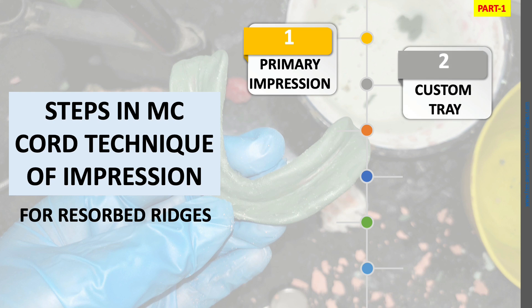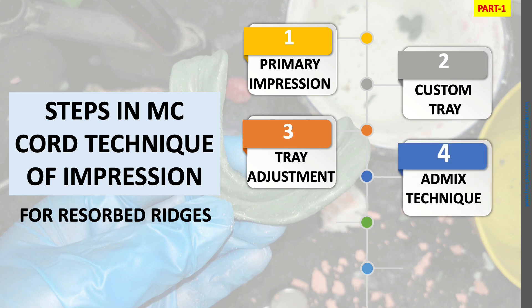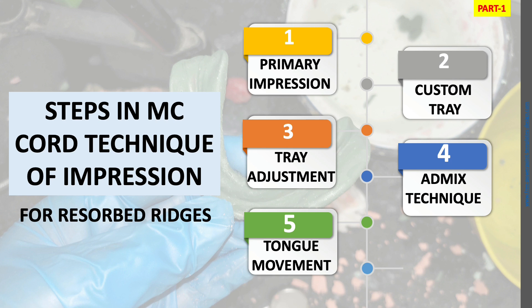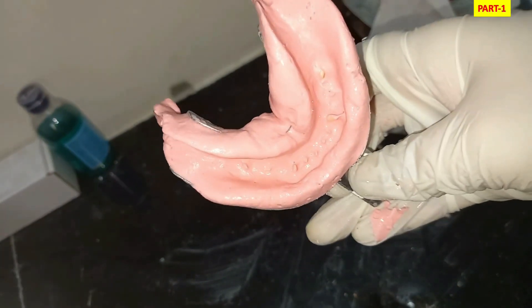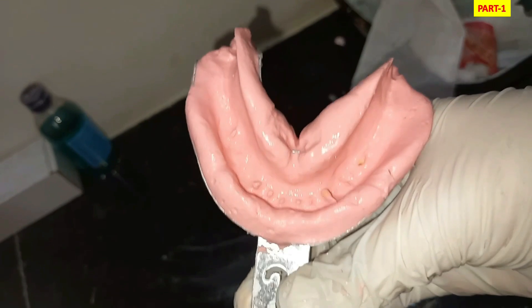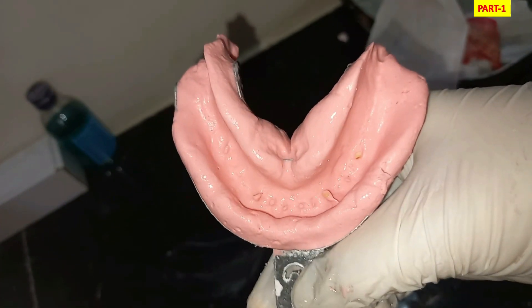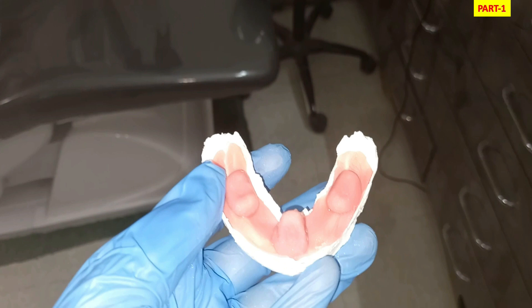Now let's begin with the steps of the McCord technique of impression for severely resorbed ridges. First, we take a primary impression as in all cases of complete denture. Then we fabricate a custom tray, then do a tray adjustment, then take the Admix or McCord technique impression, then perform tongue movement to record borders, and finally do a wash impression. For the primary impression, we use a stock tray with alginate or impression compound, then pour the cast to fabricate the custom tray. After fabricating the custom tray with handles or stops, we perform border molding. All steps up to the custom tray are the same as in the conventional method.